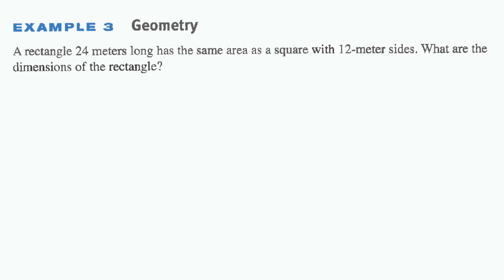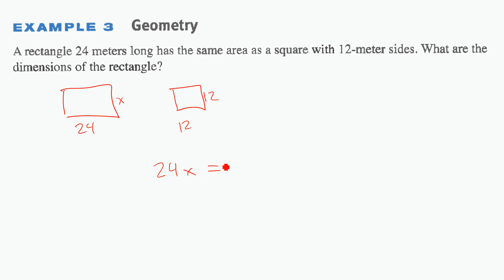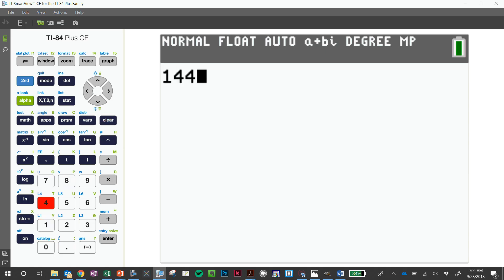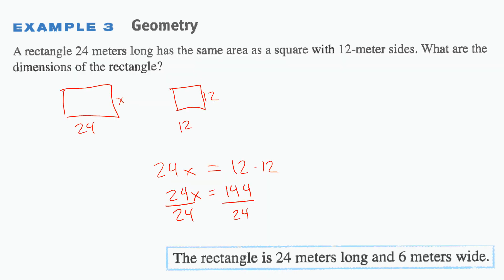Example: a rectangle 24 meters long has the same area as a square with 12-meter sides. What are the dimensions of the rectangle? We don't know the width, so: area of rectangle = 24x equals area of square = 12 × 12 = 144. So 24x = 144, divide by 24, x = 6. The rectangle is 6 meters wide and 24 meters long.